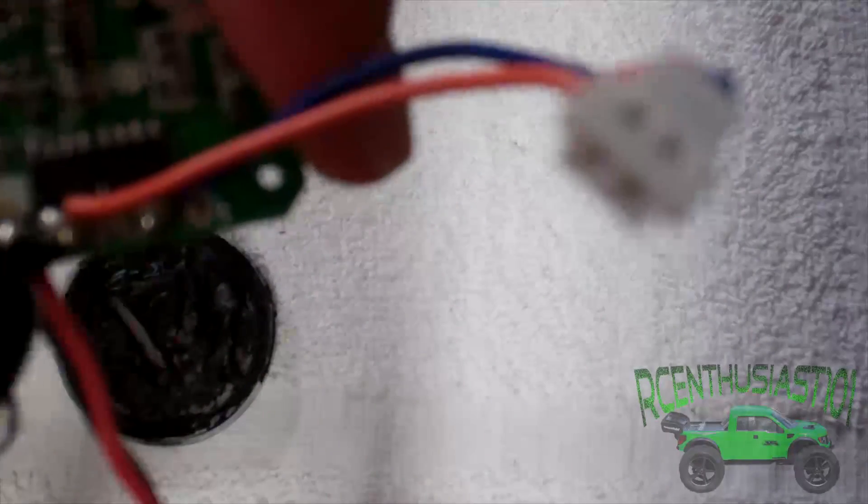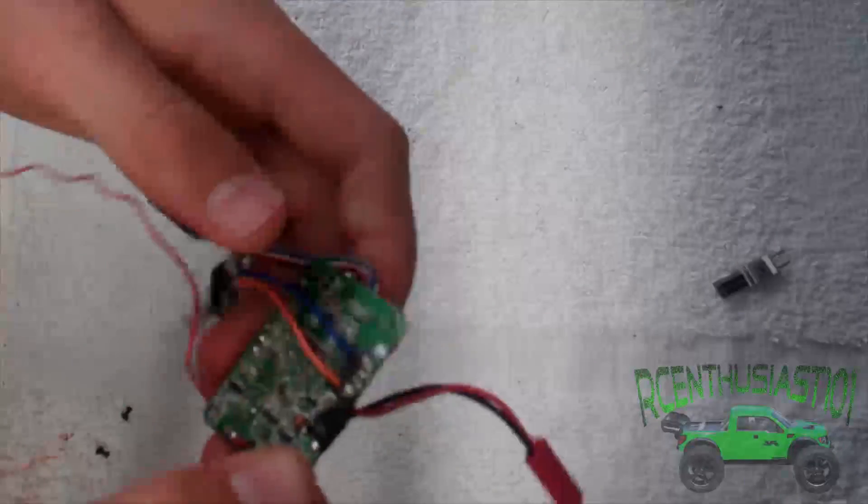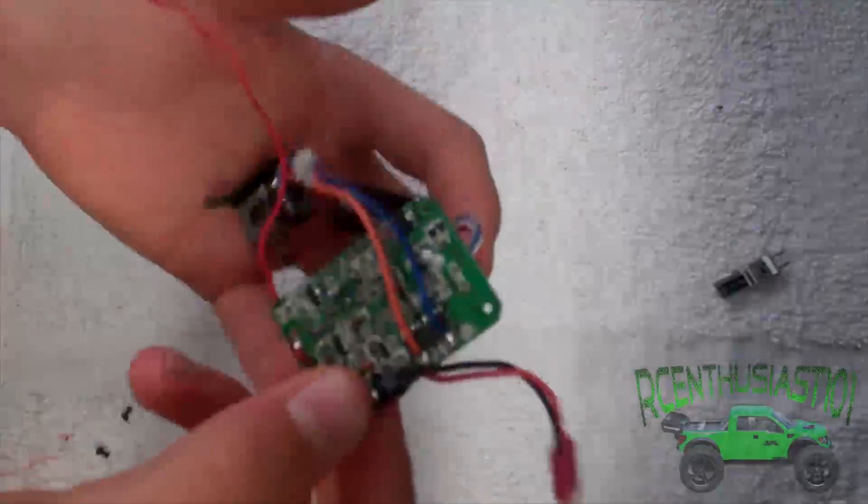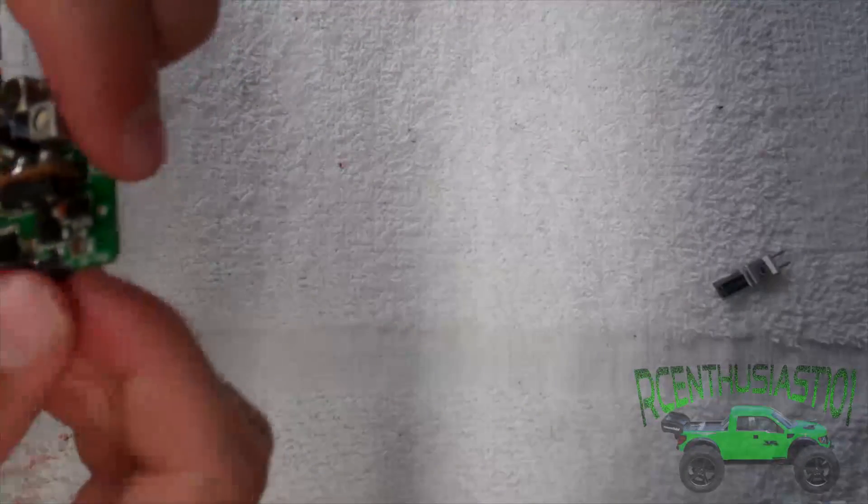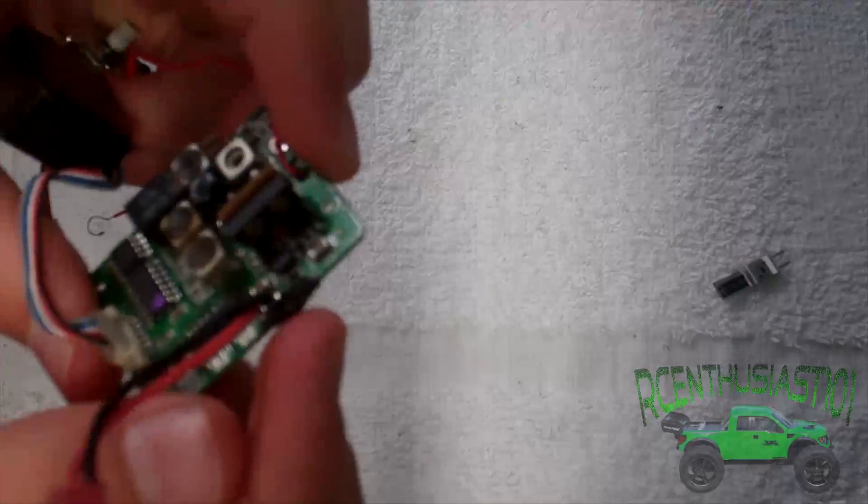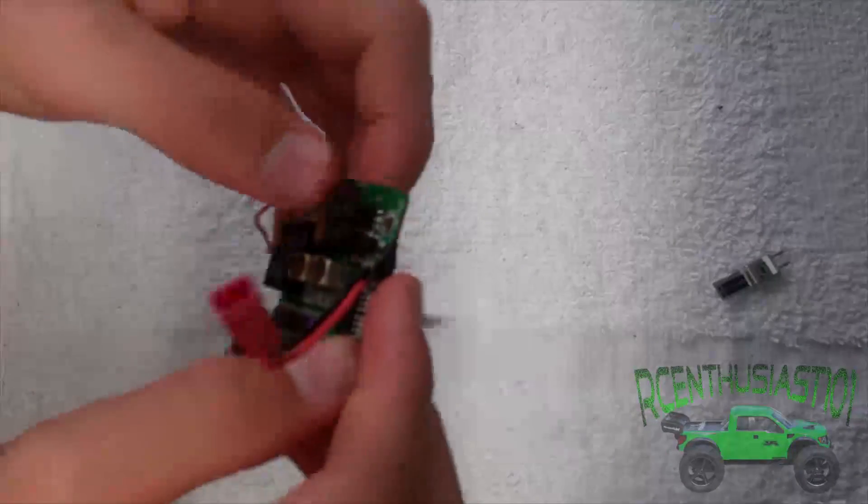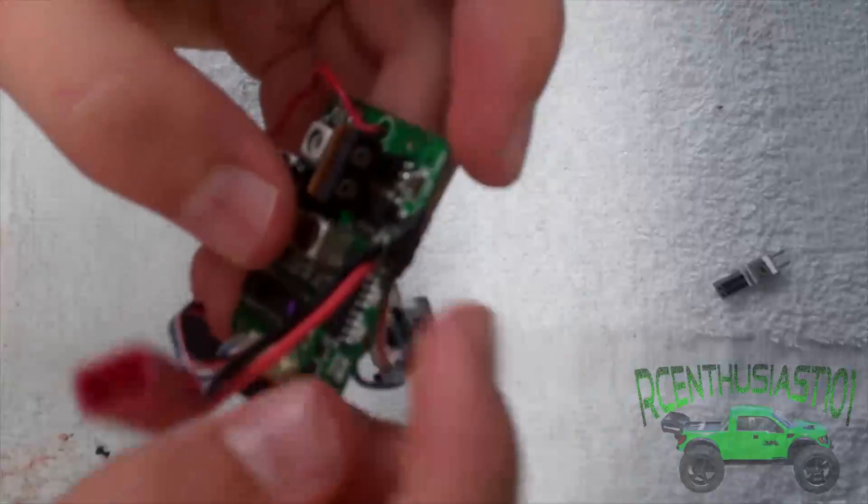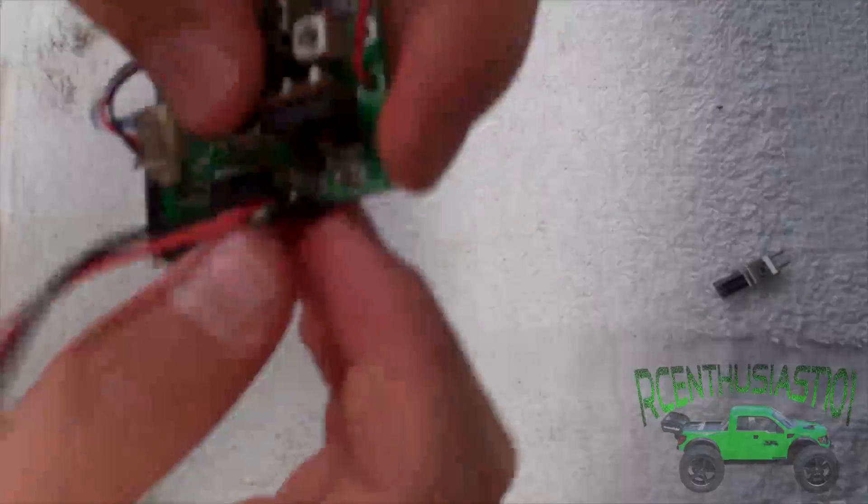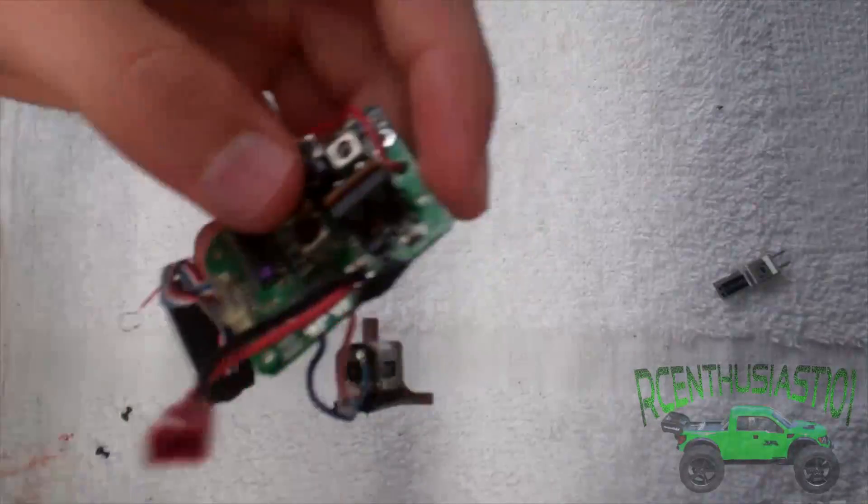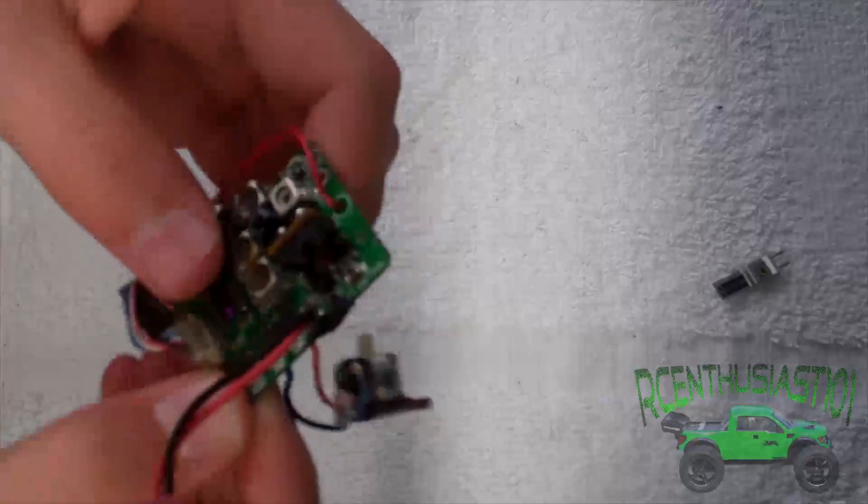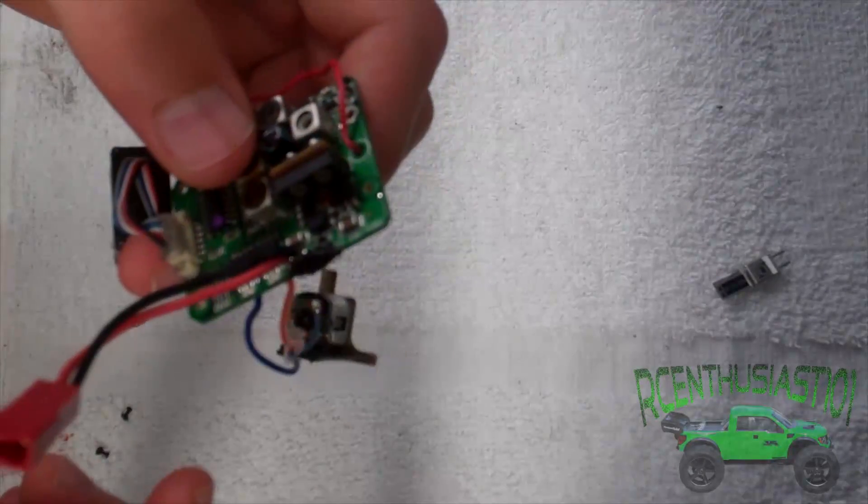And something I'd like to mention is that if you're going to be doing this on a bigger ESC you're going to want to just strip the tips of the wires and then just twist them together and then dip the tips in Plasti Dip or liquid tape or whatever you prefer.